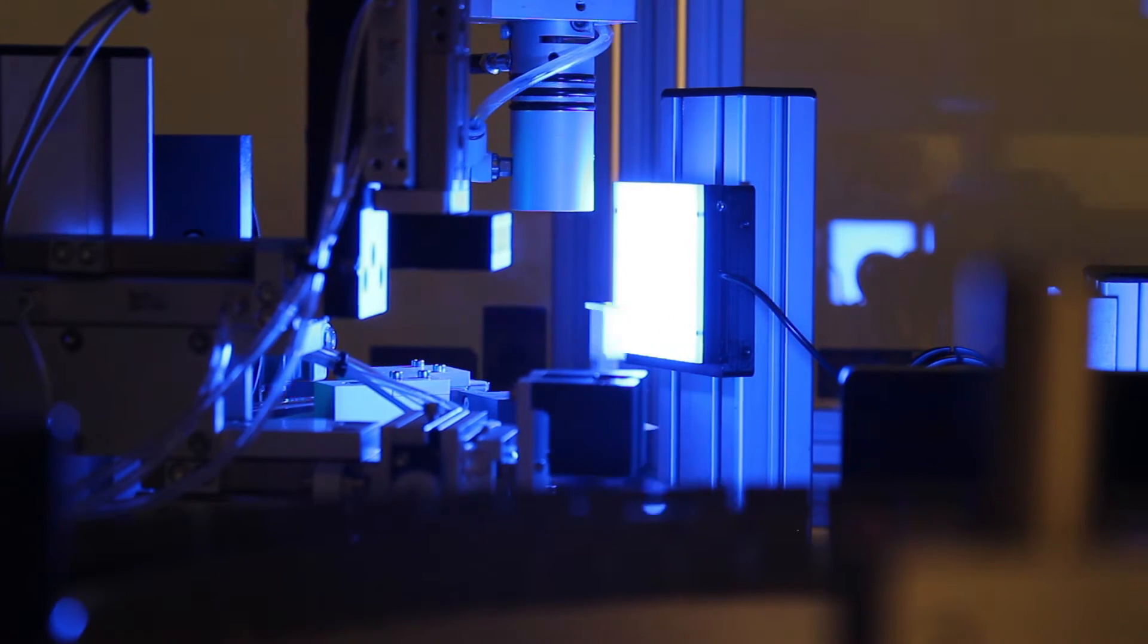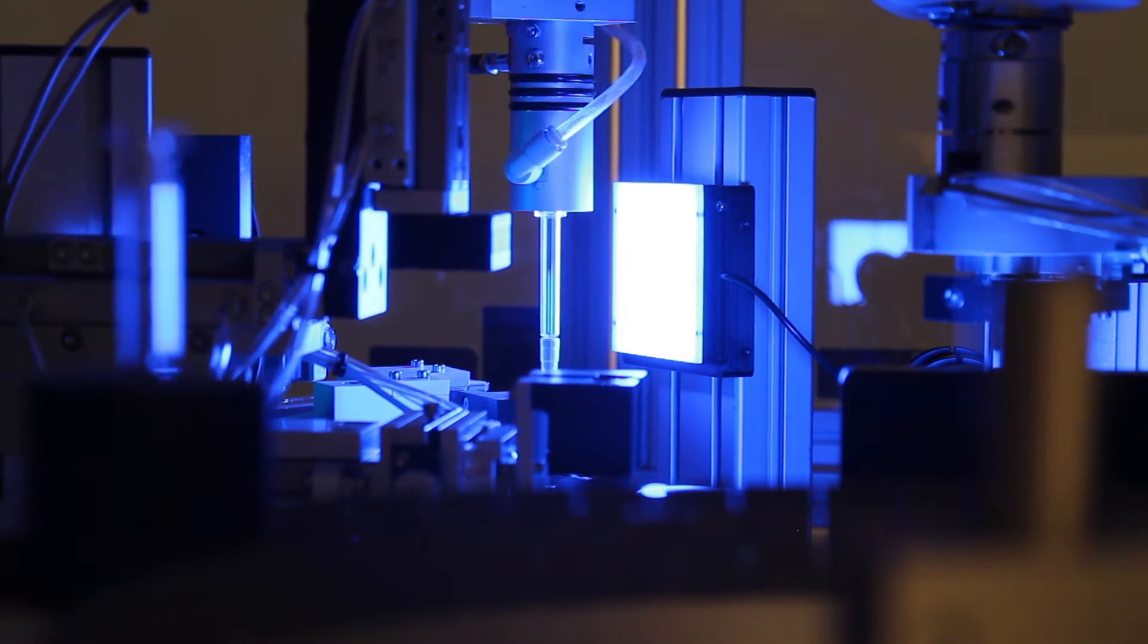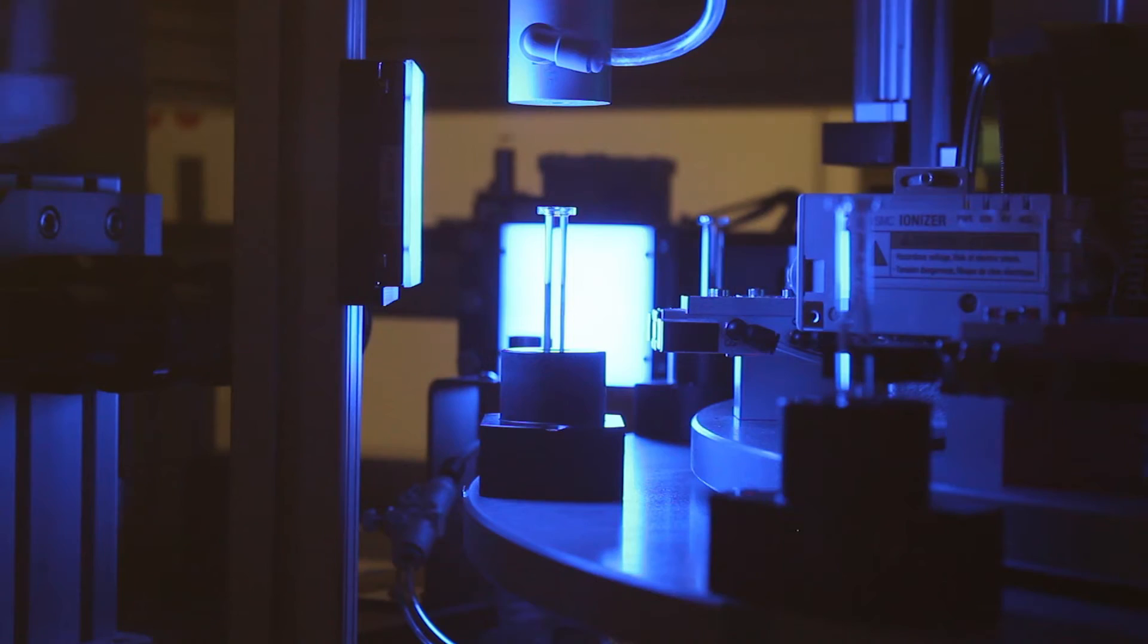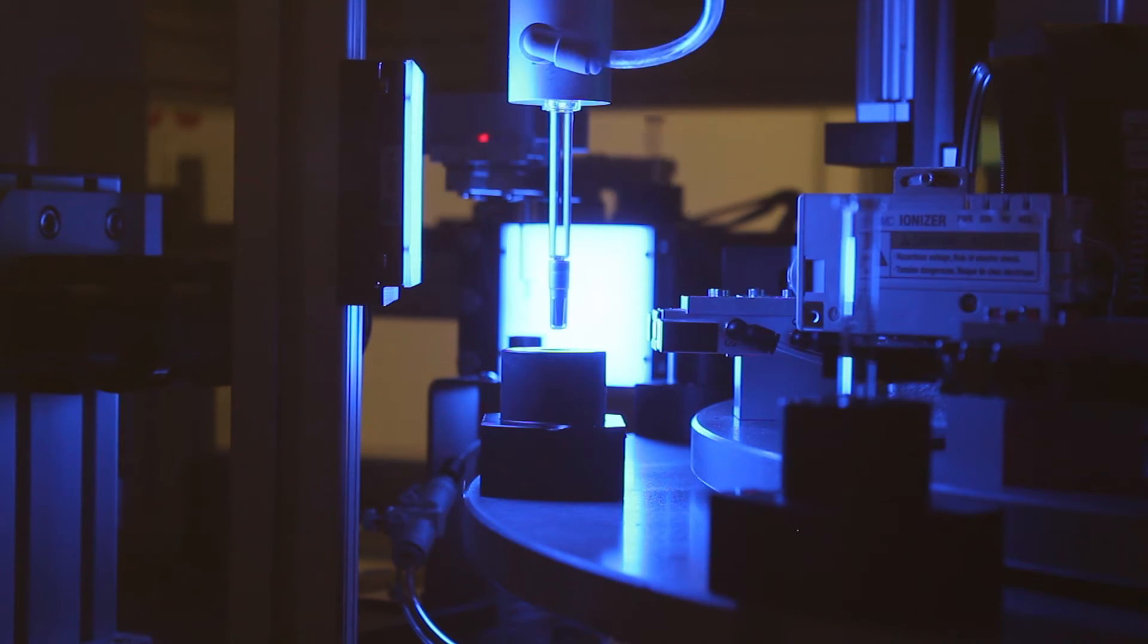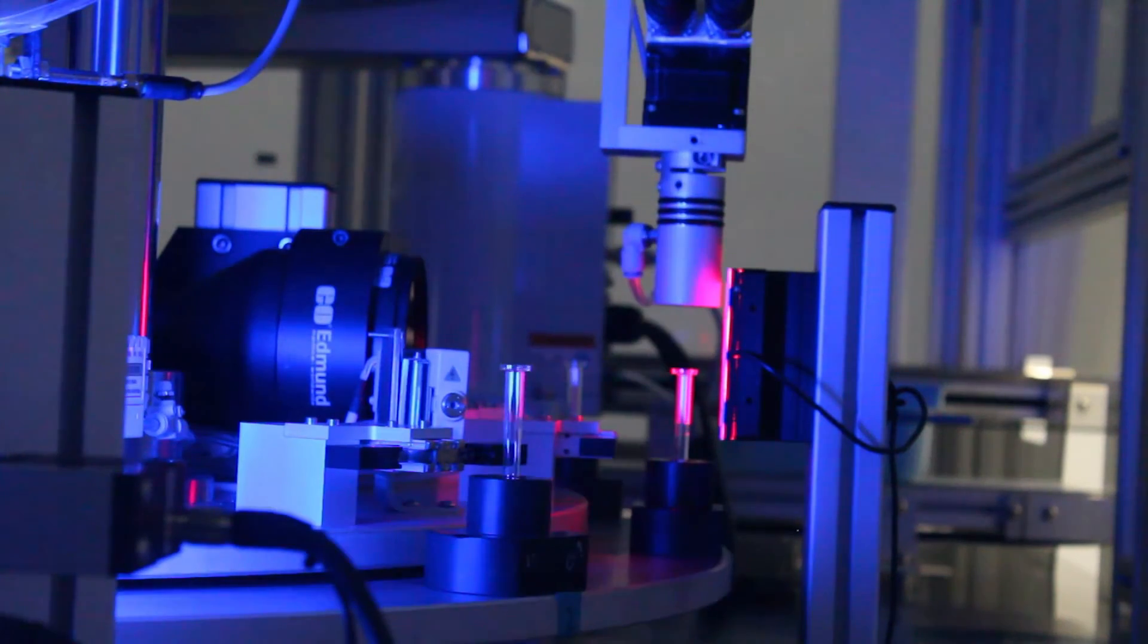Syringes are then conveyed to a fully automated inspection and unique identification labeling machine. The camera systems inspect for dimensional tolerance, particulates down to 50 microns, and needle alignment or straightness.